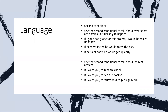And then the last one, the second conditional. We have two usages for this conditional. The first usage is to talk about events that are possible but unlikely to happen. For example: 'If I got a bad grade for this project, I would be really unhappy.' And: 'If he went faster, he would catch the bus' — he might not be able to go faster, but if he went faster, he would catch the bus. And: 'If he slept early, he would get up early' — possible but unlikely.